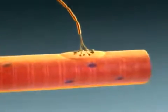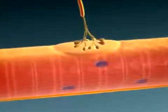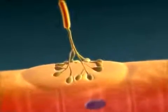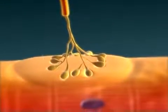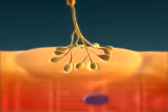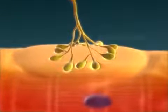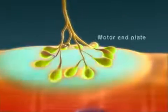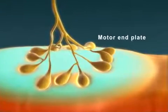The site where a motor neuron excites a skeletal muscle fiber is called the neuromuscular junction. This junction is a chemical synapse consisting of the points of contact between the axon terminals of a motor neuron and the motor end plate of a skeletal muscle fiber.